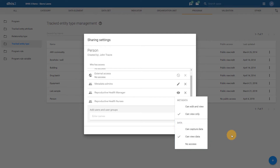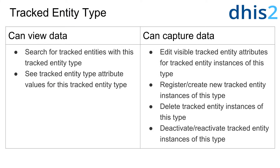Let us discuss what these different options allow us to do in relation to tracked entity types. To start, let us review the can view data sharing setting for tracked entities. By sharing a tracked entity with a user or user group with the data can view data setting, this will allow them to search for tracked entities using the specified tracked entity type, as well as see tracked entity attribute data values for the shared tracked entity type.